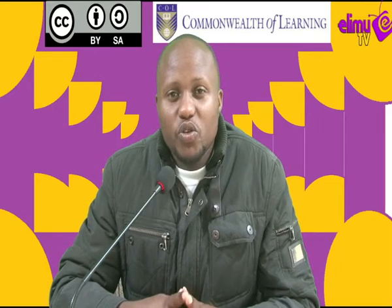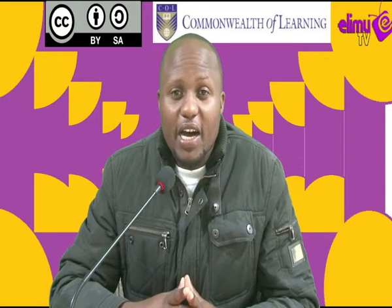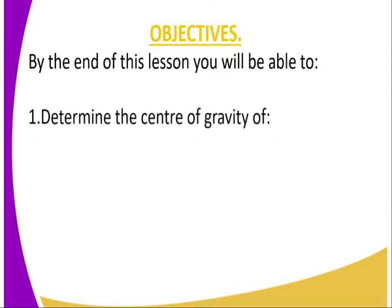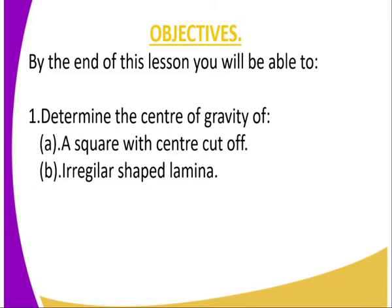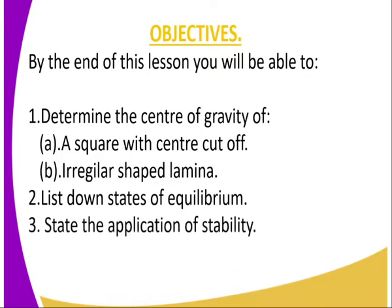We will also look at the states of equilibrium. The goals of this lesson are as indicated. Number one, that is to determine the center of gravity of a square with a cut off at the center and an irregular shaped object, a lamina — how can we get its center of gravity? We will also list down the states of equilibrium and state the application of stability in various areas.